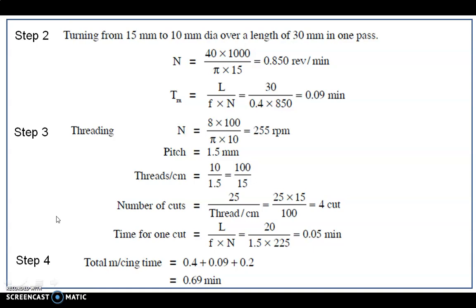The next step is turning from 15 mm to 10 mm diameter over a length of 30 mm in one pass. From 15 to 10 mm is only 5 mm total material removal, so a 2.5 mm depth of cut achieves the final 10 mm diameter. N = 40 × 1000 ÷ (π × 15) = 850 RPM. Machining time = 30 ÷ (0.4 × 850) = 0.09 minutes.